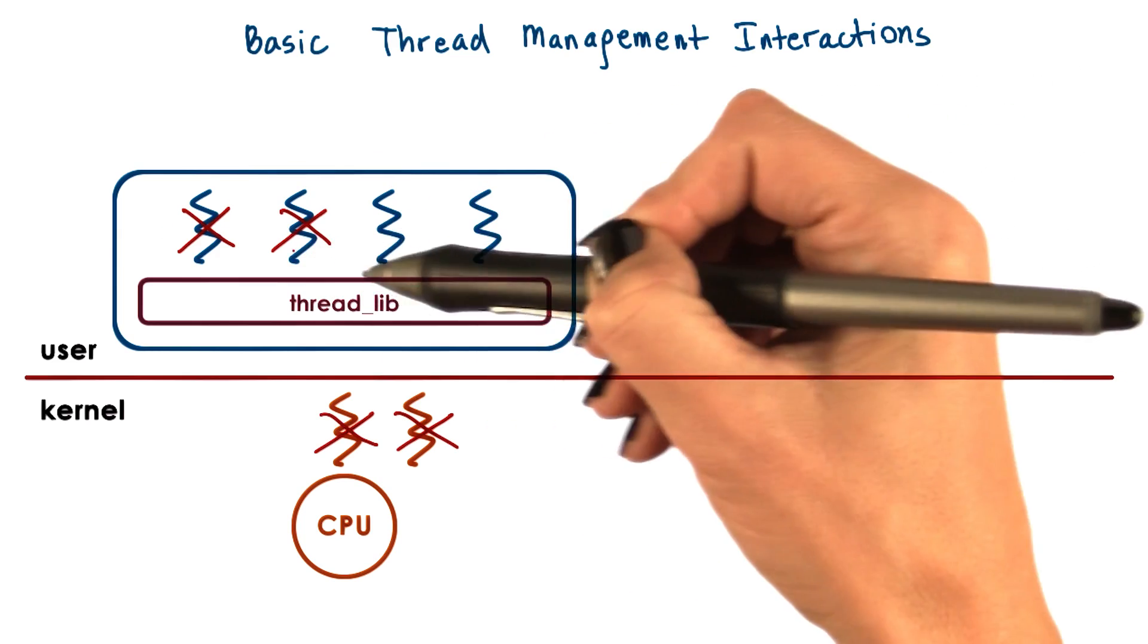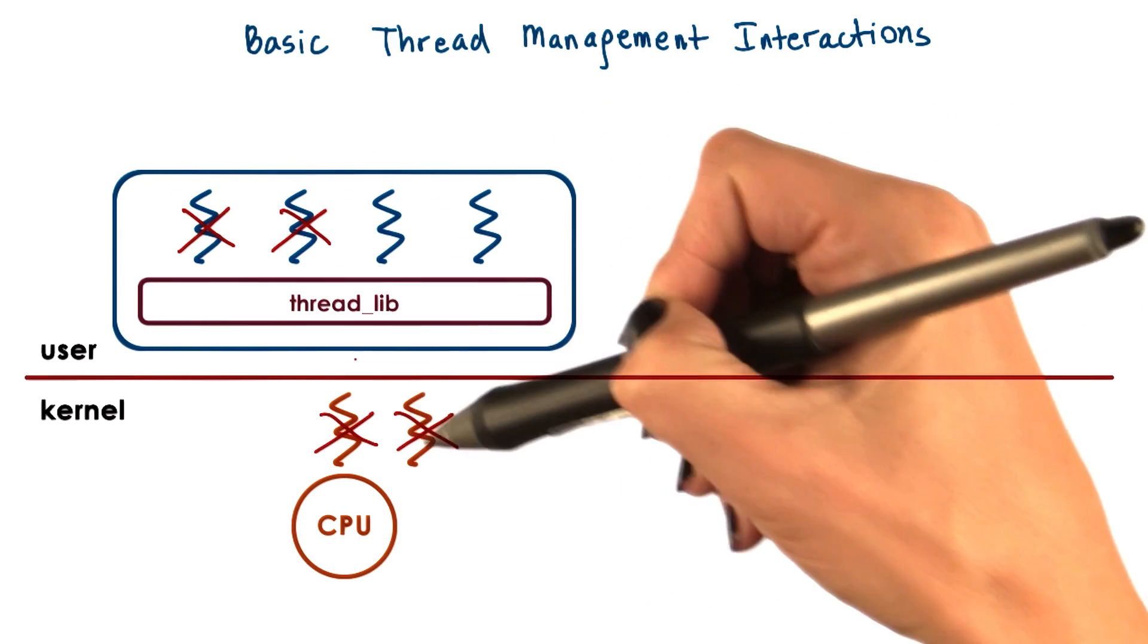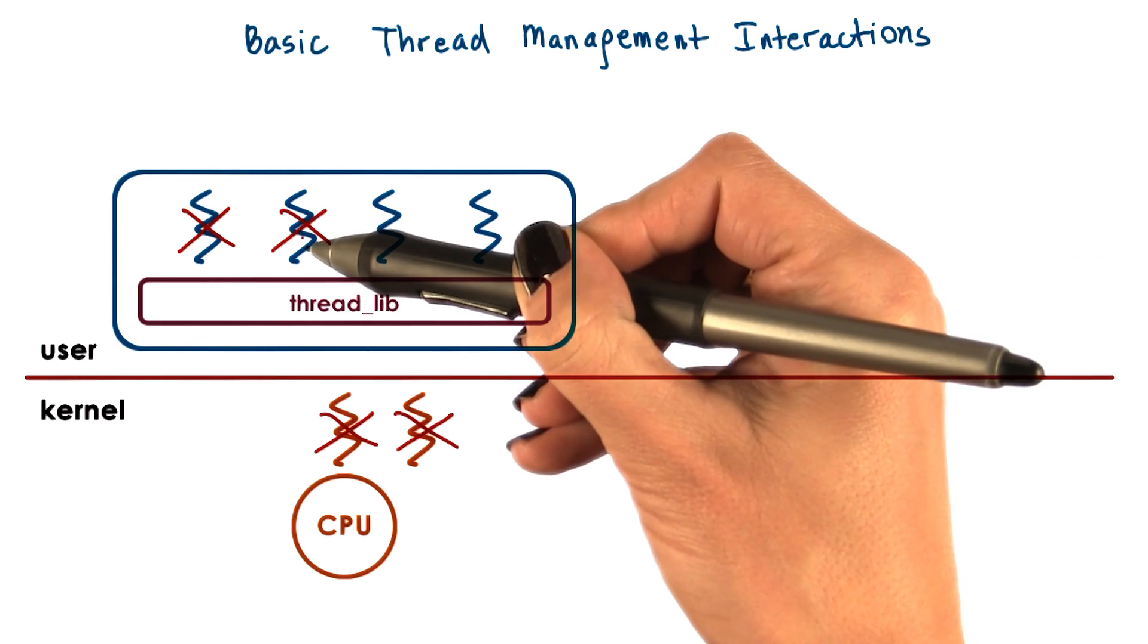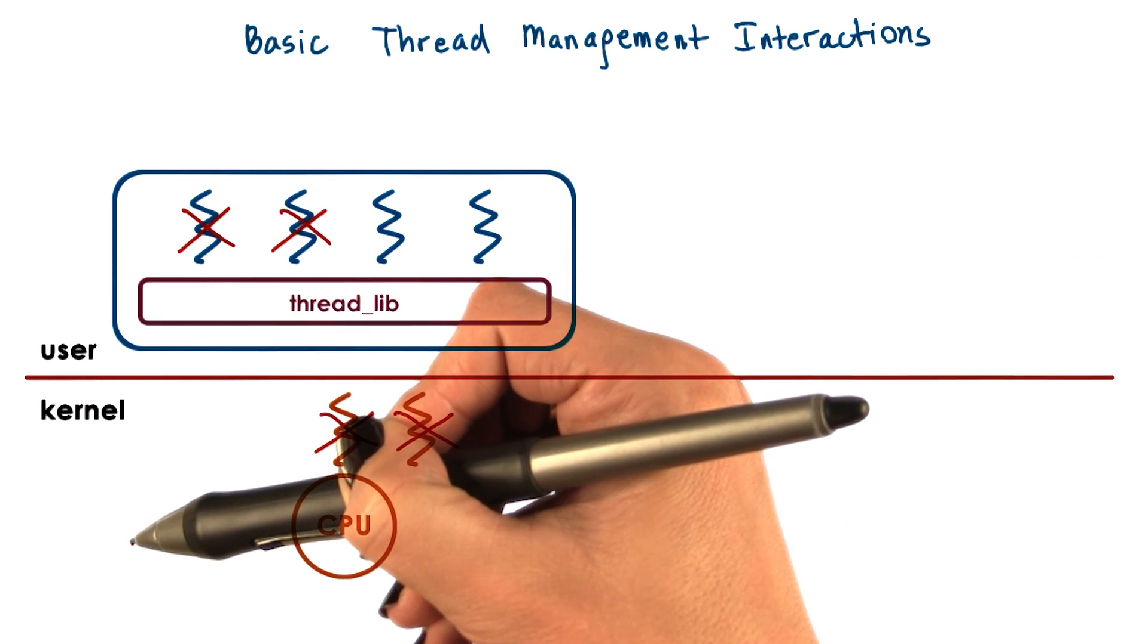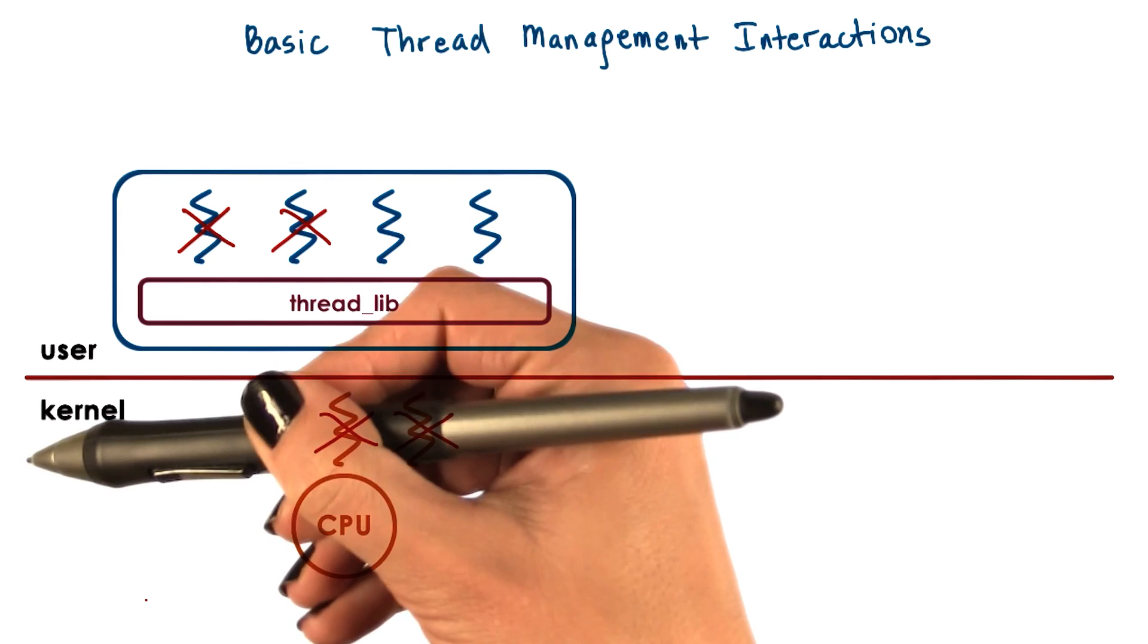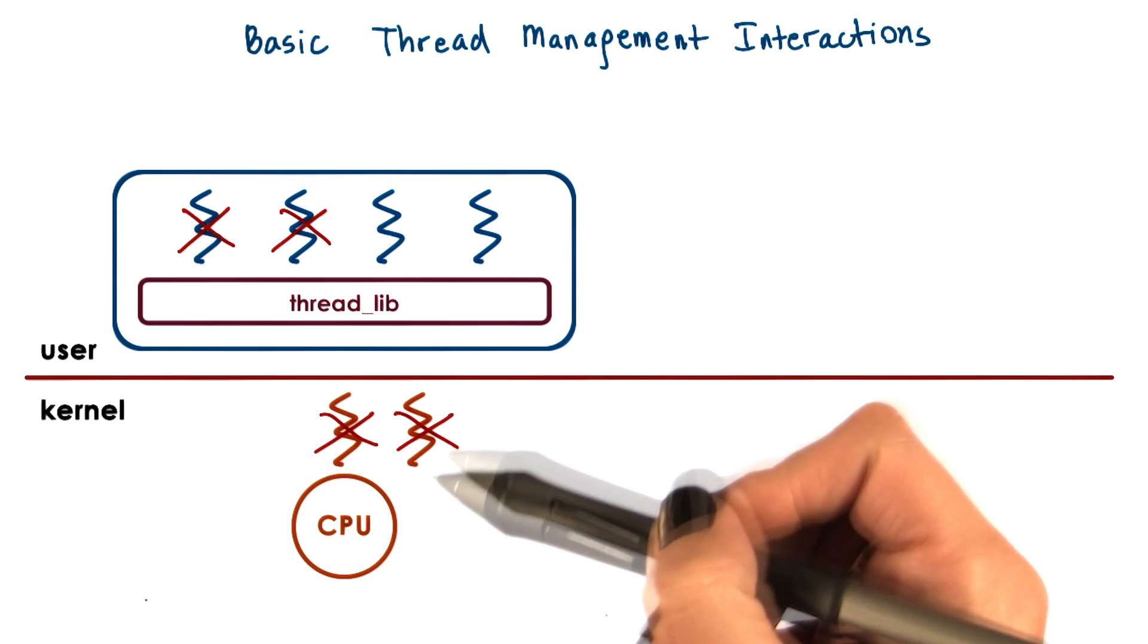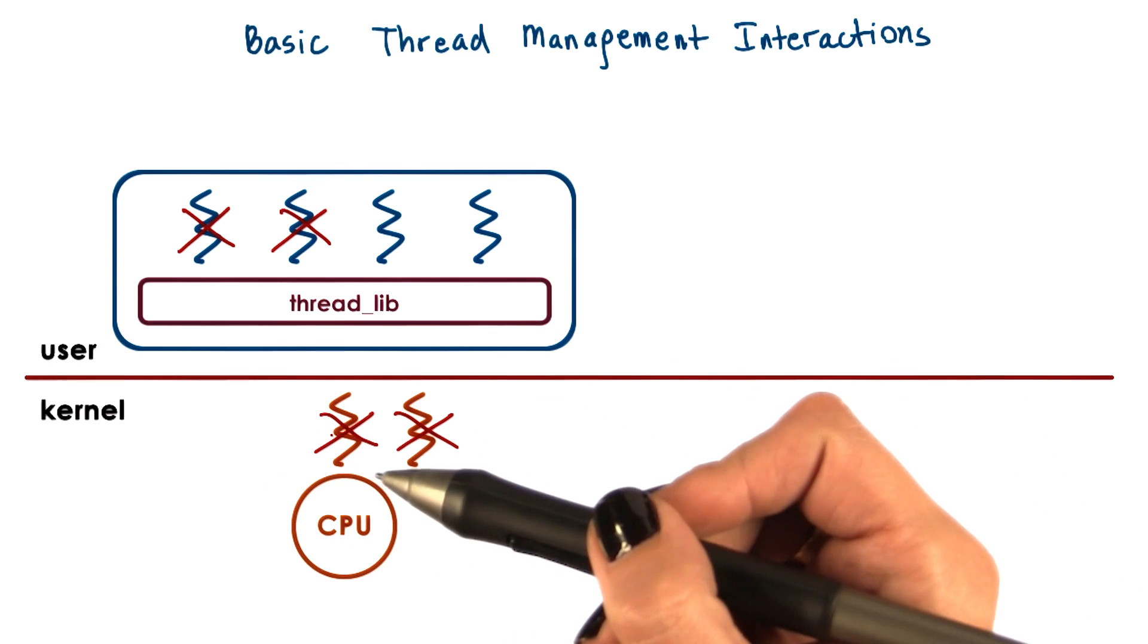Now consider the scenario where the two user-level threads mapped to kernel-level threads block. They need to perform an I/O operation and are moved to the wait queue associated with that I/O event. The kernel-level threads are blocked as well.